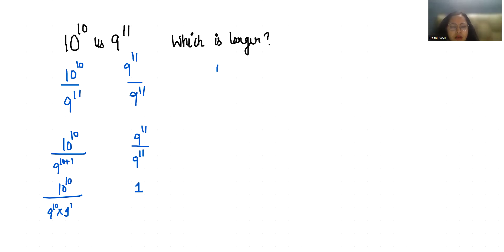10 power 10 by 9 power 10 times 1 by 9 power 1, and here 1. So 10 by 9 whole power 10 times 1 by 9, and here 1. So we can write 10 as 1 plus 9 by 9 whole power 10 times 1 by 9, here 1.